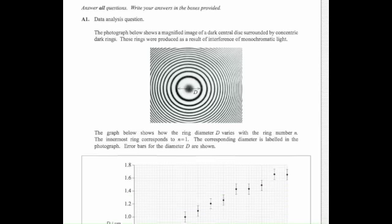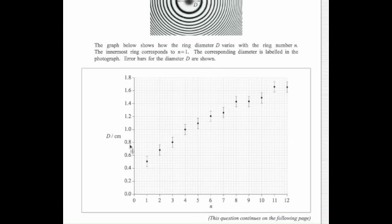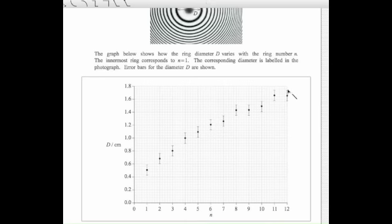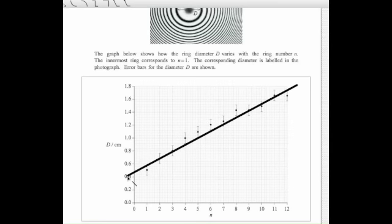Now, if the two quantities were proportional, we would be able to draw a straight line that fit all of the error bars and pass through the origin. We can attempt to do that, but you can see we can barely draw a straight line. In fact, we can't actually draw a straight line that fits all of the error bars. This straight line just misses one, two, three, four error bars. So that suggests that not only are they not proportional, they're not even linear.